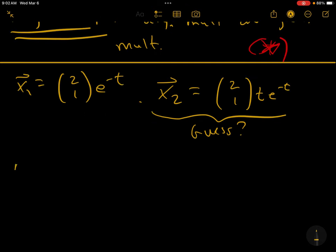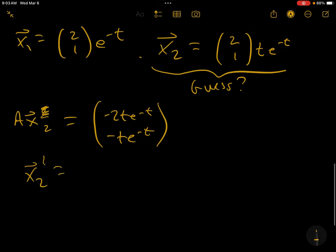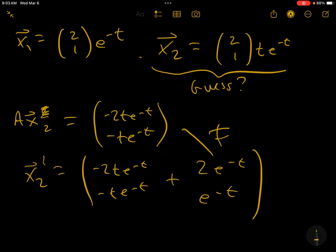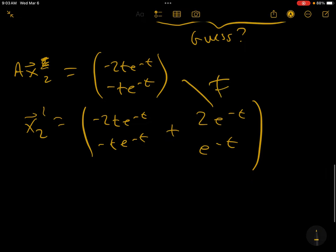When you take A times X2, you end up with the solution minus 2t e to the minus t, minus t e to the minus t. And when you look at X2 prime, you do pick up this vector, but you also pick up this. These two should be equal, and they're not. So our guess isn't quite right.